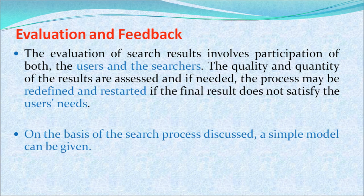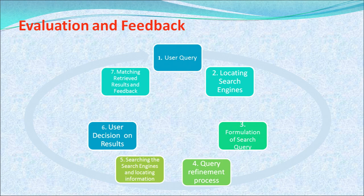If the final result does not satisfy the user's needs, a simple model of the search process can be followed: starting with the user query, locating search engines, formulating the search query, redefining the query if needed, searching the search engine, locating the information, making a user decision on the result, managing retrieval results, and obtaining feedback. In this lesson, we talked about information search, storage mechanisms — dictionary, numeric, and classified arrangements — types of searches, skills of conducting a search, and the steps of the search process.